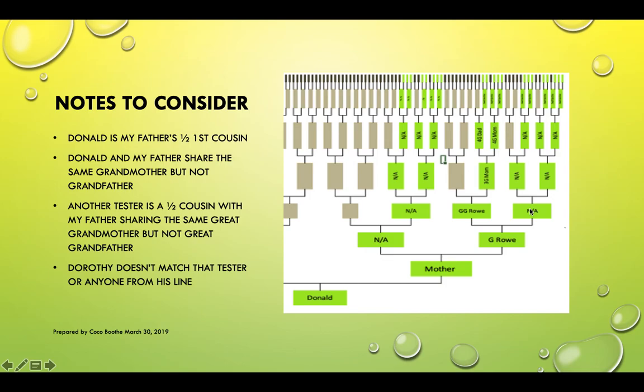There are several people who tested from his side of the family and she matches none of them. But she matches several people from the great-grandfather's line. You can see how I'm working my way up the tree using the half cousins.